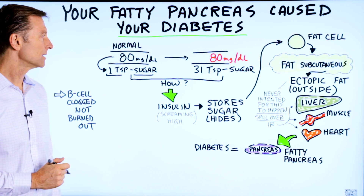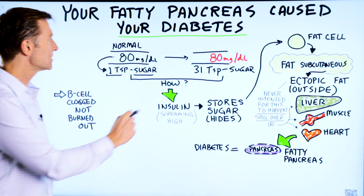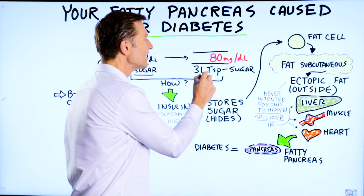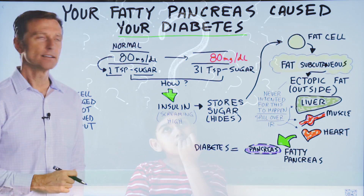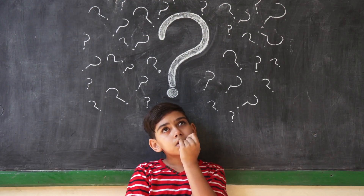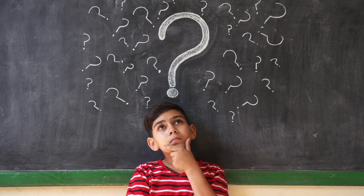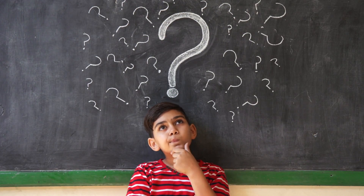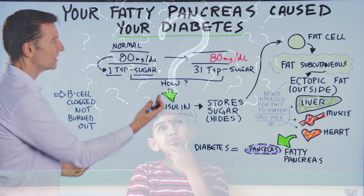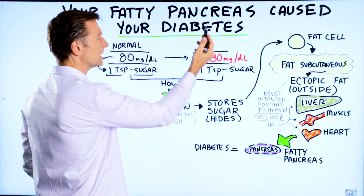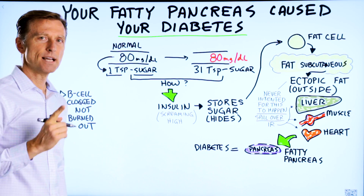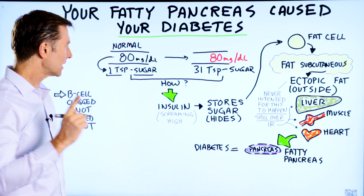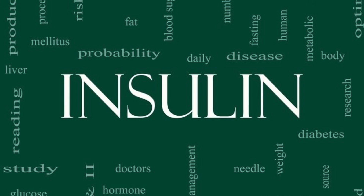An average American consumes 31 teaspoons of sugar per day. But why do they still have normal blood sugars? You would think that blood sugar would go up immediately. Well, it doesn't — because of one thing: a hormone called insulin.